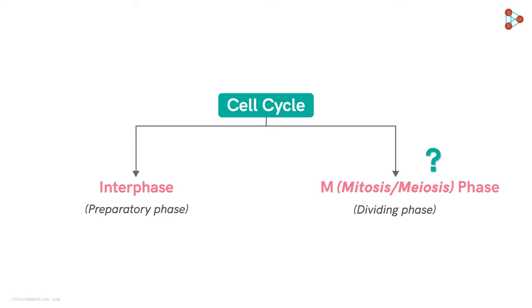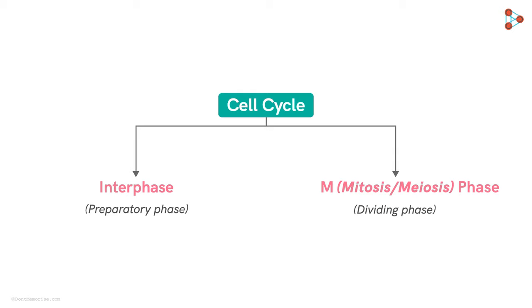How does the cell decide whether to undergo mitosis or meiosis? That depends on various factors and the type of cell undergoing division. Keep your eyes glued to the video to spot the differences between mitosis and meiosis.